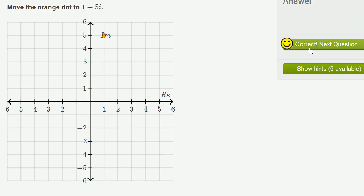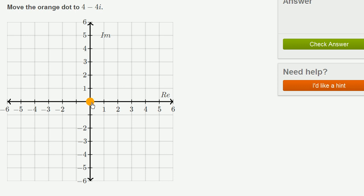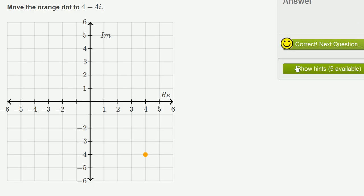All right, let's do one more of these. 4 minus 4i. Real part is 4. Imaginary part is negative 4. And we're done.